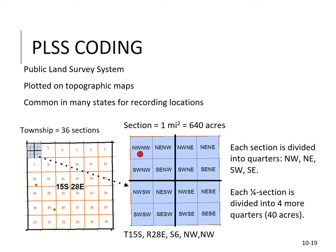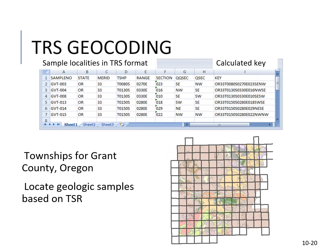Another type is the Public Land Survey System (PLSS) geocoding, which is typically plotted on topographic maps and is common in many states for recording locations. You would read a location as, for example, township 15 south, range 28 east, section 6, northwest corner of the northwest corner. Each section is divided into quarters, each quarter section into four more quarters — all 40 acres. TRS geocoding is another type, showing townships for Grant County, Oregon to locate geologic samples based on TRS.